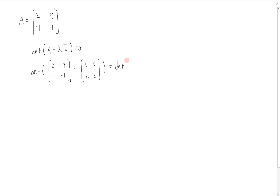That's equal to the determinant of the combined matrix: we get [[2 - lambda, -1], [-4, -1 - lambda]].